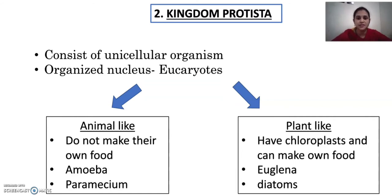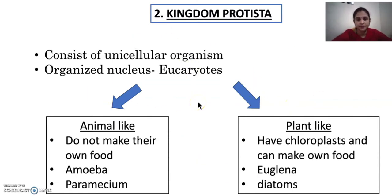Eukaryotes means the organisms which have an organized nucleus — that means the nuclear materials are enclosed in a nuclear membrane. Kingdom Protista consists of organisms which are plant-like and which are animal-like. There are two different categories: some of them are plant-like, some of them are animal-like.